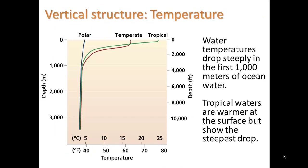When we take a look at the temperature, as we go deeper, it gets colder. Water temperatures drop steeply in the first 1,000 meters of ocean water, and tropical waters are warmer at the surface but show the steepest drop. You can see tropical regions here, but they drop very sharply. And once we go to about 1,000 meters, it's all the same temperature.